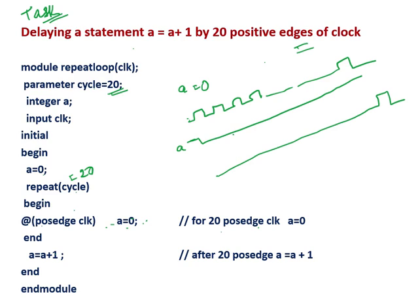Repeat is a very useful construct in Verilog. You can write the same code in your simulator — Xilinx ISE, ModelSim, or CocoTb. You can check and get this kind of waveforms in the waveform view. The repeat will be repeated for 20 times, so every positive edge of clock A equal to 0, and for 20 positive edges A equal to 0. When the 21st clock comes, it will be A equal to A plus 1. So we are simply delaying a statement or a signal with the help of this repeat loop.